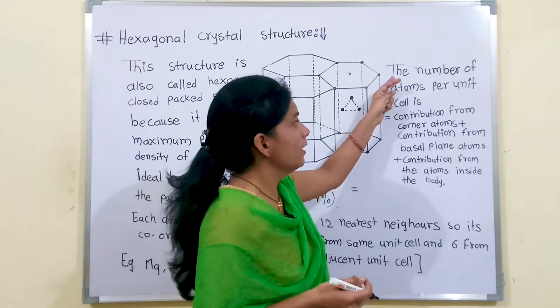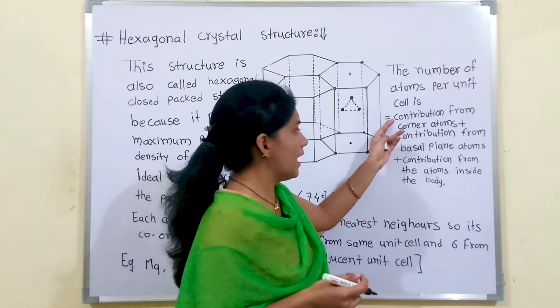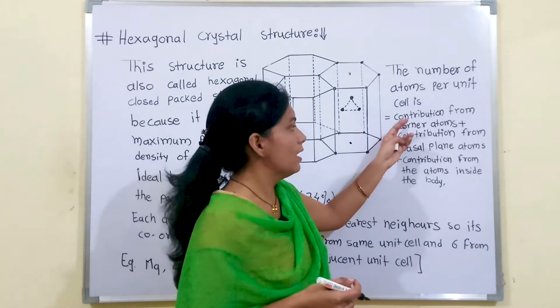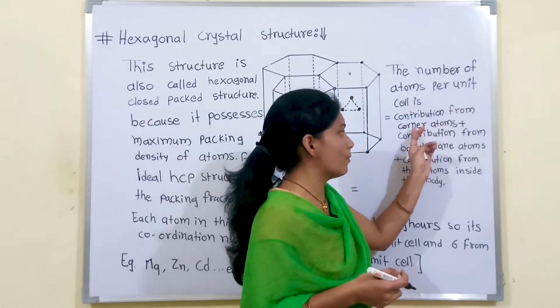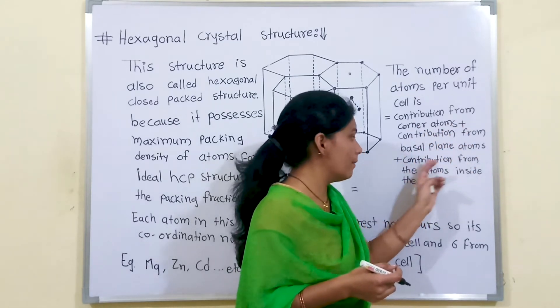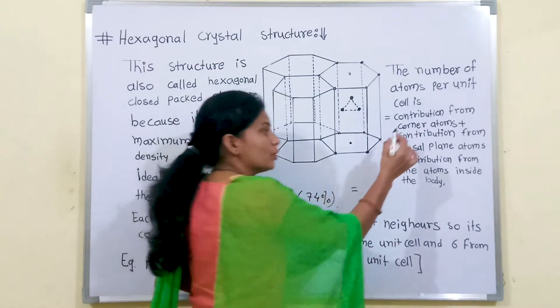We can discuss about the number of atoms per unit cell. We have here formula for the calculation of atom per unit cell: contribution from corner atom plus contribution from basal plane atom plus contribution from the atom inside the body.